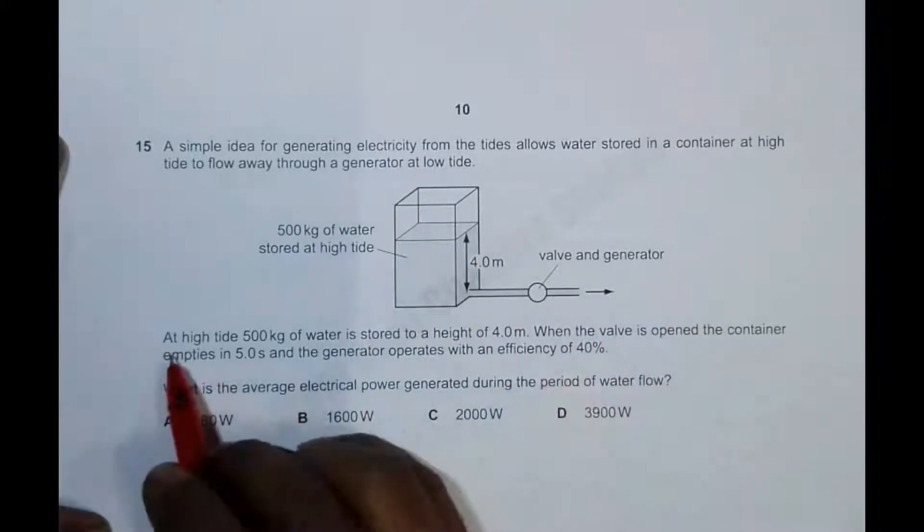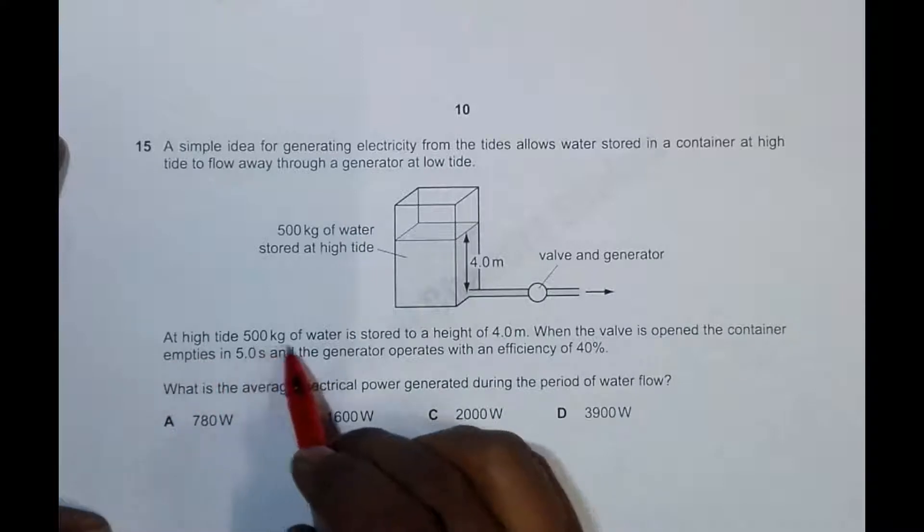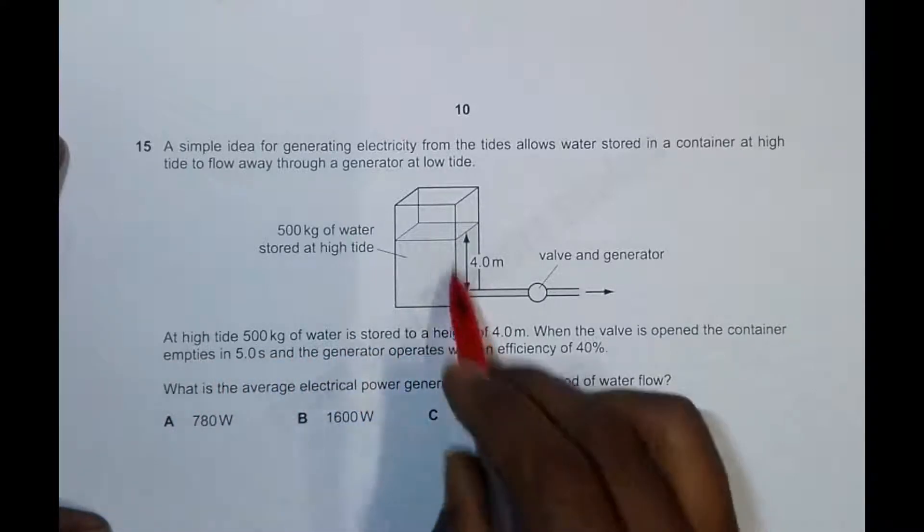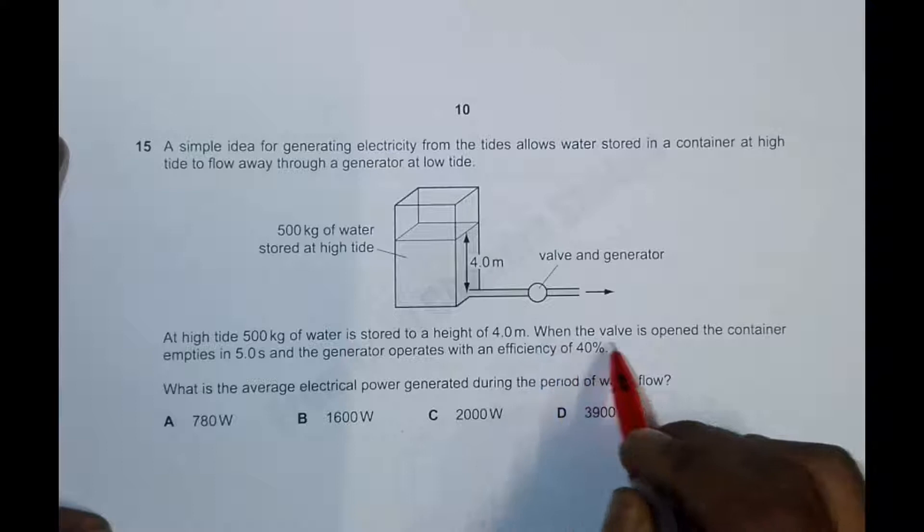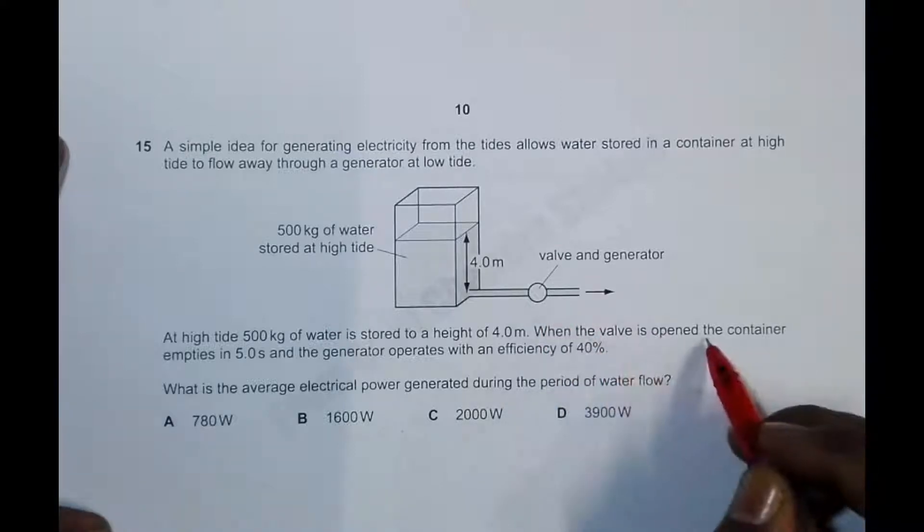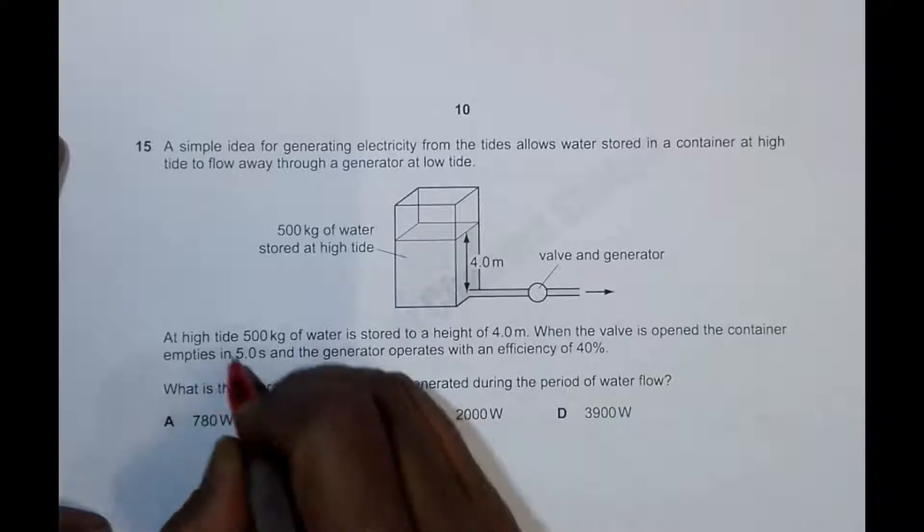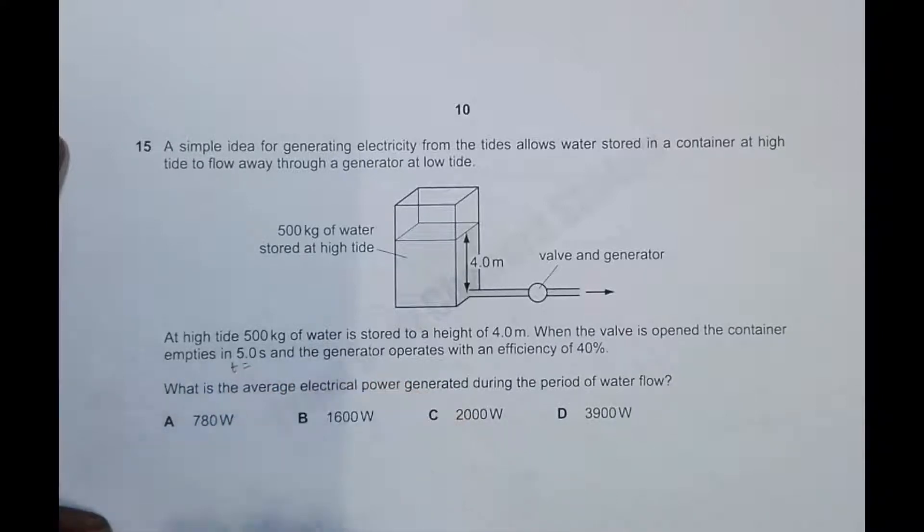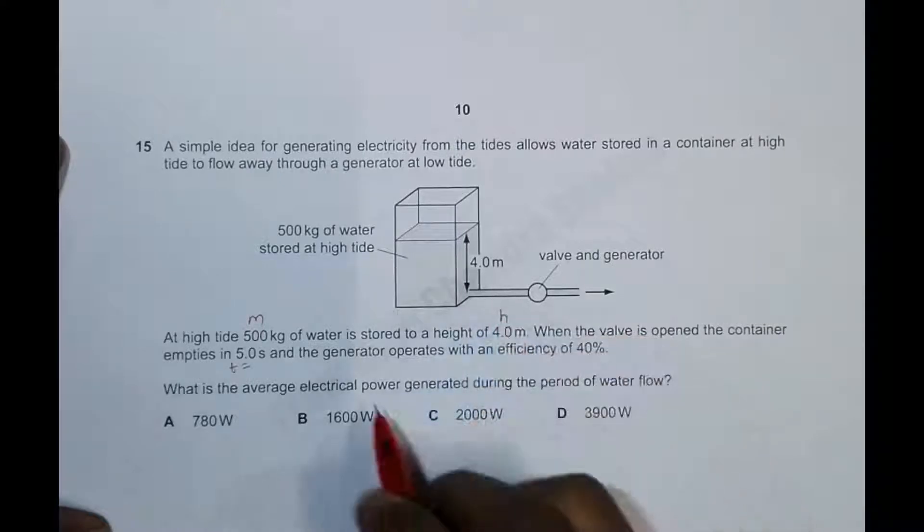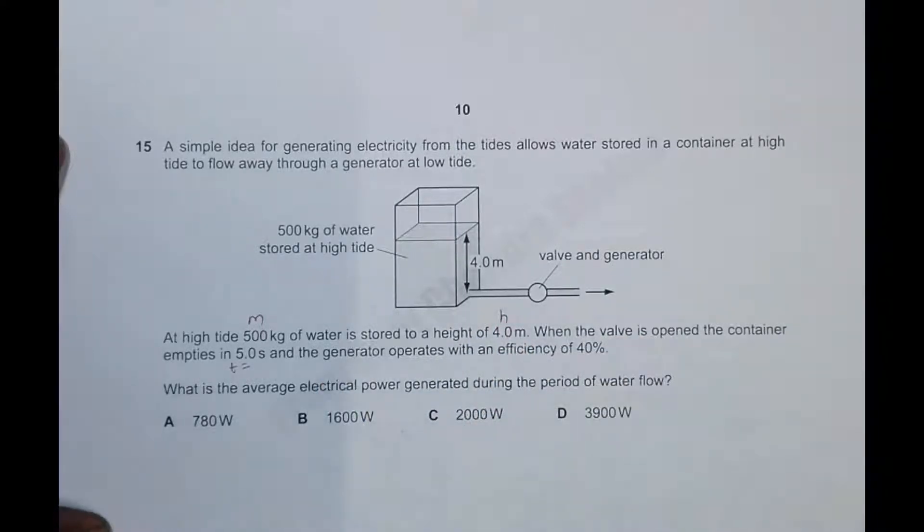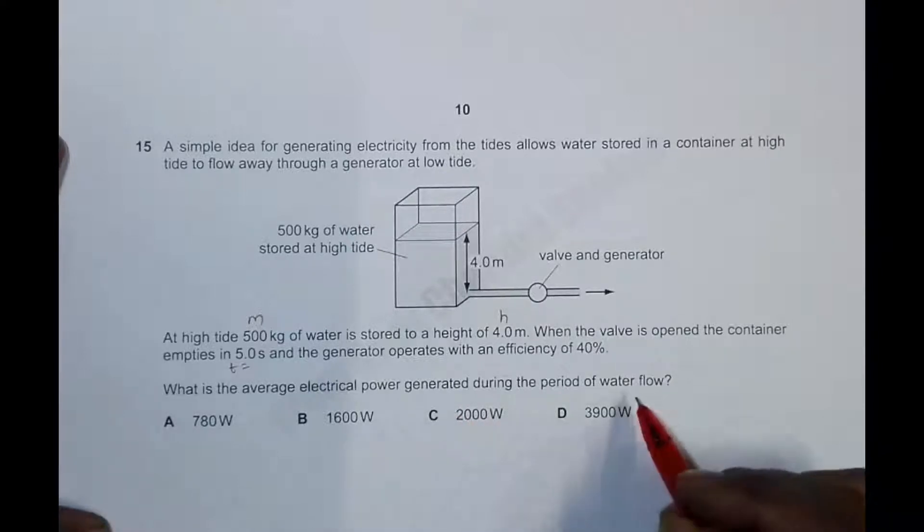At high tide, 500 kg of water is stored to a height of 4 meters. When the valve is opened, the container empties in 5.0 seconds. So this is your time, this is the mass, this is the height, and the generator operates with an efficiency of 40%. What is the average electrical power generated during the period of water flow?